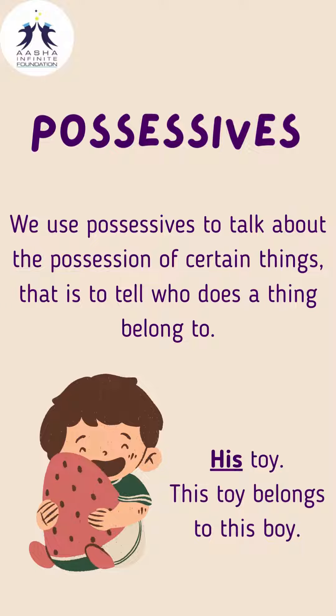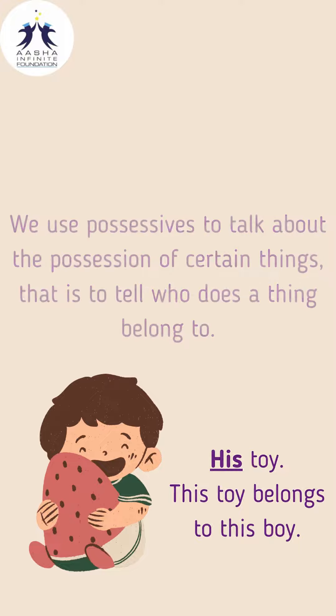Now let's look at possessives. We use possessives to talk about the possession of certain things — that is, to tell who a thing belongs to. For example: 'his toy' means this toy belongs to this boy.